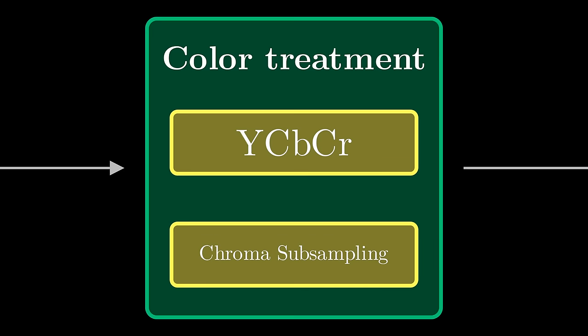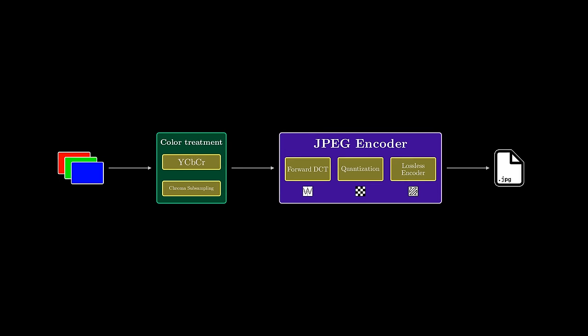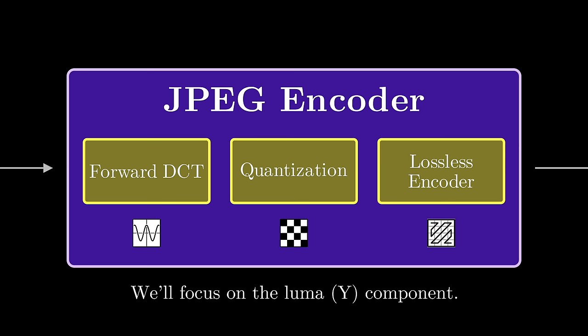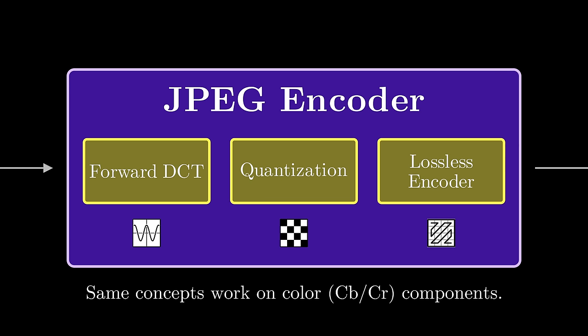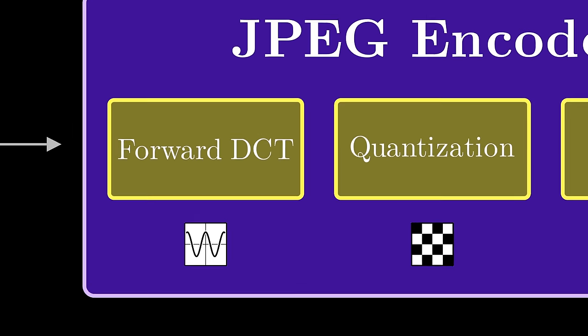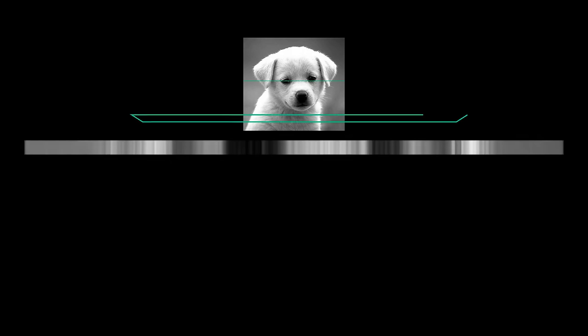We're still quite far from the 5% levels we saw in JPEG, so we're going to have to exploit more than just human perception of brightness. For the following components of JPEG, let's focus on the Y channel, which essentially defines grayscale images. The principles we'll discuss from here on out will also apply to the color components of an image.